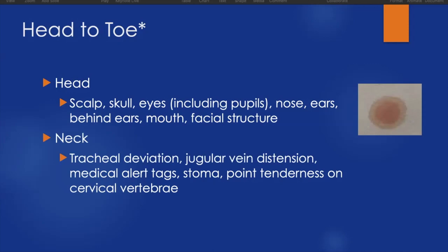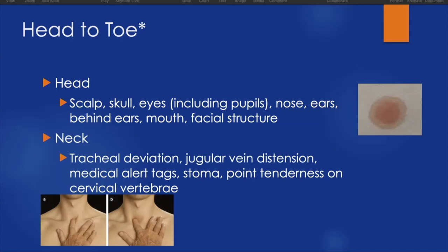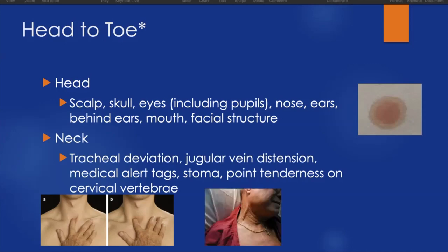We can check the neck. The front of the neck is not given to palpation — it's pretty uncomfortable for patients — so we will inspect the front of the neck and look for things like tracheal deviation. The trachea or windpipe should be sitting midline down the front of the neck; if it's off to the side, it could be indicative of bigger things going on. We're also looking for jugular vein distension. We can look for medical alert tags, stomas, or a history of a tracheostomy where they had a breathing tube placed in the front of the neck.